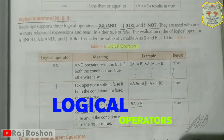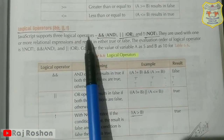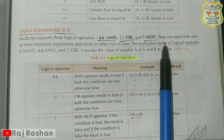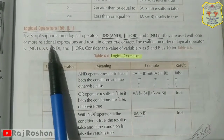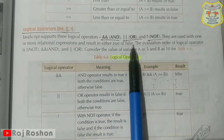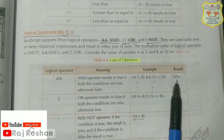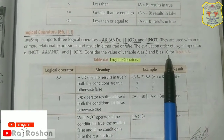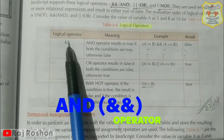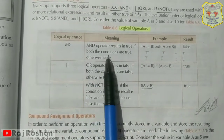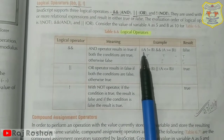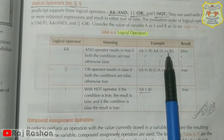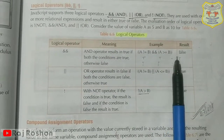Logical operators: JavaScript supports logical operators AND, OR, and NOT. These are the three logical operators supported in JavaScript. They are used with one or more relational expressions and the result is either true or false. Consider a is 5 and b is 10. The AND operator results in true only if both conditions are true, otherwise it is false. Here, two expressions — a is not equal to b AND a is greater than or equal to b — both conditions evaluate to false, so the result is false.